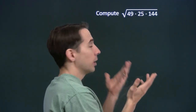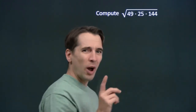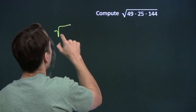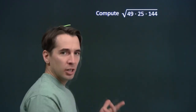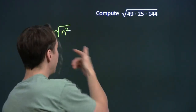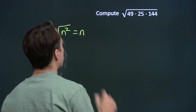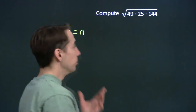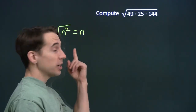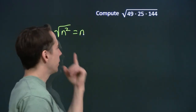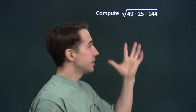Those are all perfect squares. We like perfect squares and square roots because we know how to take the square root of a perfect square. Remember that from when we first started talking about square roots: if n is non-negative, we take the square root of n squared, and that gives us n, because the square root of n squared is the number we square in order to get n squared. That's n.